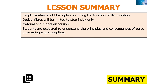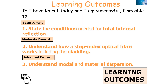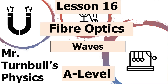In today's lesson, we've covered a simple treatment of fibre optics including the function of cladding, what a step index fibre optic is, material and modal dispersion, and the principles and consequences of pulse broadening and absorption. We can now state the conditions needed for total internal reflection, understand how a step index optical fibre works including how cladding works, and understand modal and material dispersion. Thank you very much for watching this lesson on fibre optics, part of the WAVES topic in AQA A-level physics. Have a lovely day.